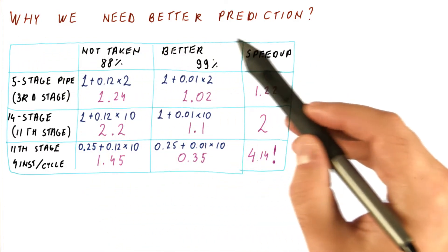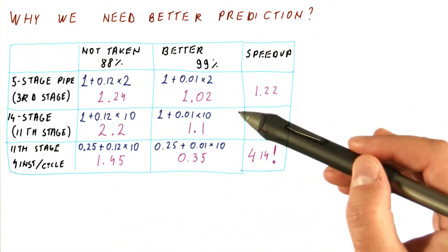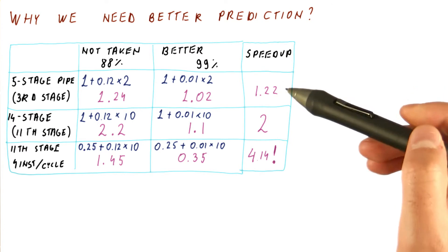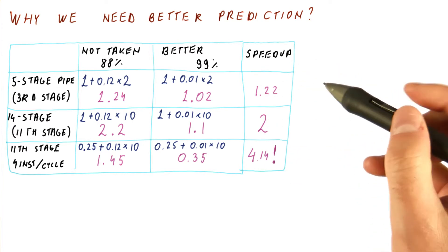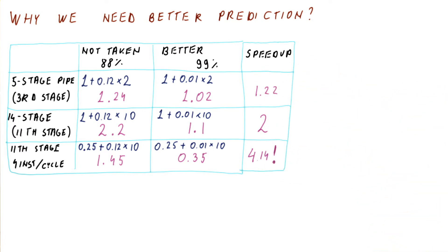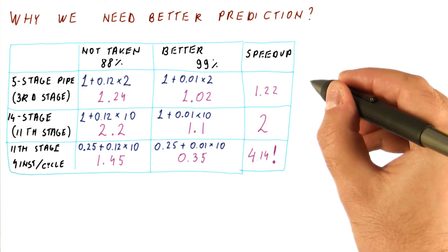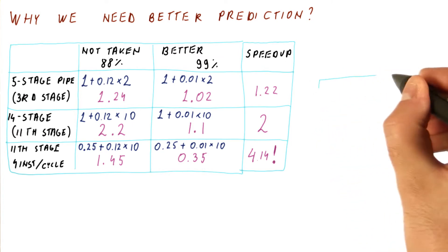We said that we will explain why we need a better predictor in two ways. This was one way — the CPI gets a lot better. The other way will be to see how much waste there is from a misprediction.